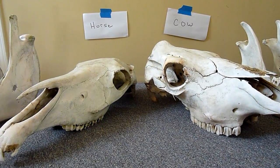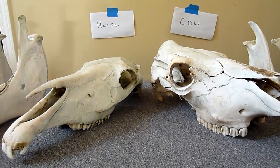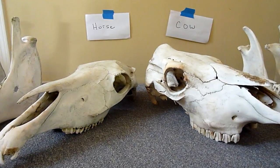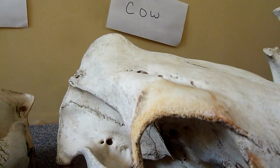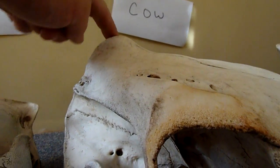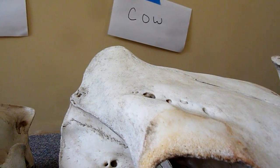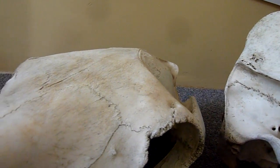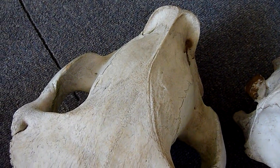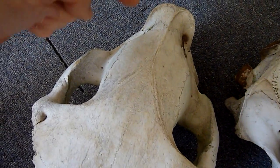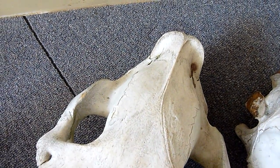Quick and easy way to identify a cow skull from a horse skull. The cow skull, as you can see, has a definite lump on the back of the head. The horse, if you look from the top, has a definite ridge — no lump — but it has a definite y-shaped ridge.